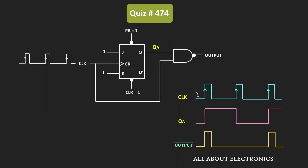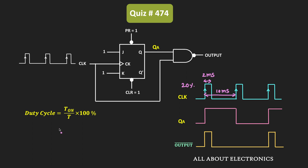We have been given that the duty cycle of the clock pulses is equal to 20%. The duty cycle of a clock pulse is given by the on time divided by the total time period, times 100%. Let's say the on time of the clock pulse is equal to 2ms. For a 20% duty cycle, the time period should be equal to 10ms, because 2ms divided by 10ms times 100% equals 20%.